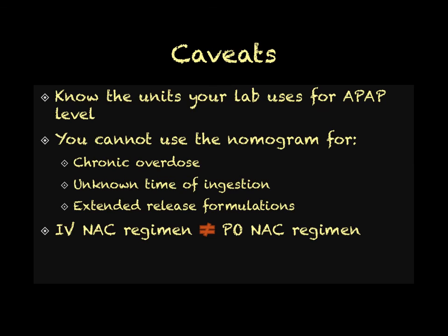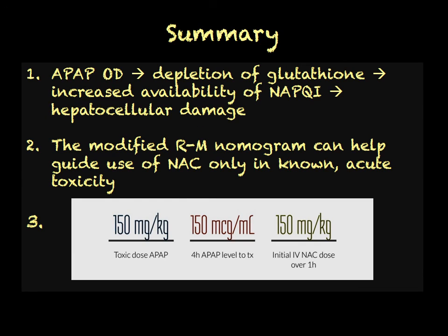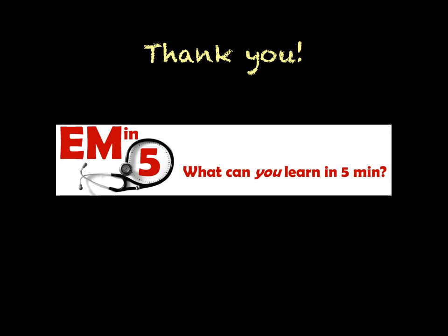To summarize: acetaminophen overdose uses up glutathione, leaving NAPQI to wreak havoc on your liver, and N-acetylcysteine is an effective antidote. The modified Rumack-Matthew nomogram can help determine if it's indicated, but only in known acute ingestions. The Rule of 150 helps you remember the toxic dose of acetaminophen, the four-hour level at which to treat, and the initial IV N-acetylcysteine dose to give over one hour. That will conclude this week's EMN5 — thanks for watching.